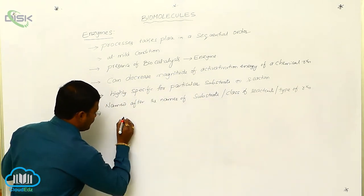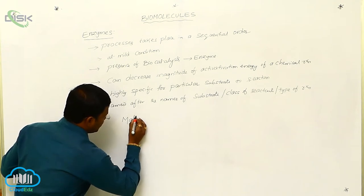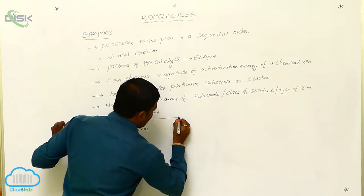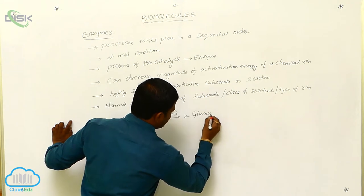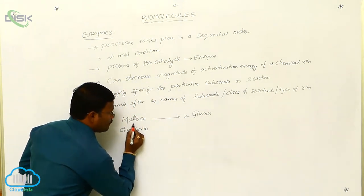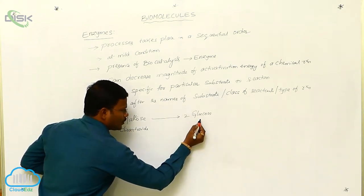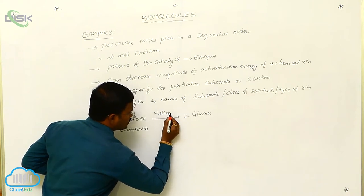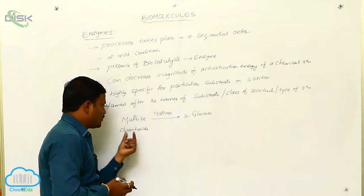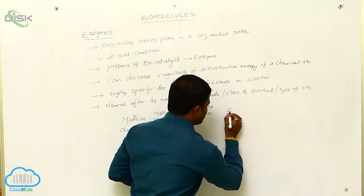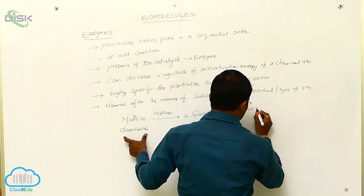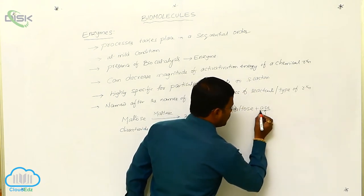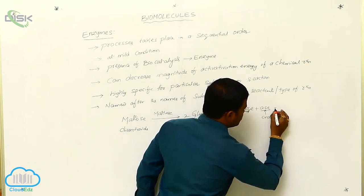For example, consider a chemical reaction in which Maltose, which is a disaccharide, can produce 2 moles of glucose. This is the substrate molecule being converted into product. For this specific reaction, the enzyme used is called Maltase. The name of the enzyme comes from the substrate molecule Maltose plus the suffix '-ase', giving Maltase. Every enzyme is pronounced with the suffix '-ase', which indicates enzyme.